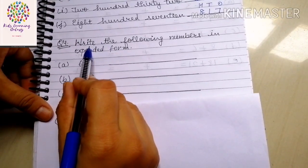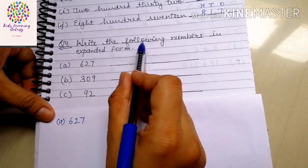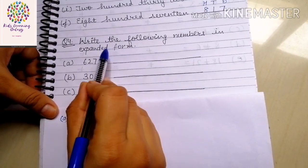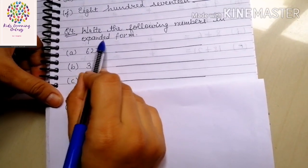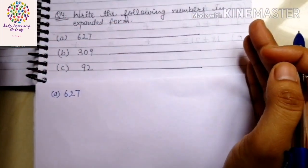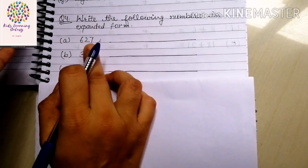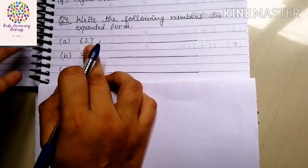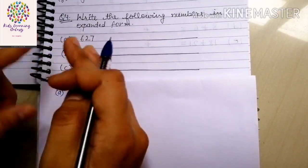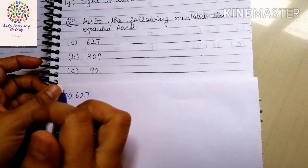The question is: write the following numbers in expanded form. Expanded form means expand kar ke likhna — expand means phela kar likhna, to write by spreading out each digit.